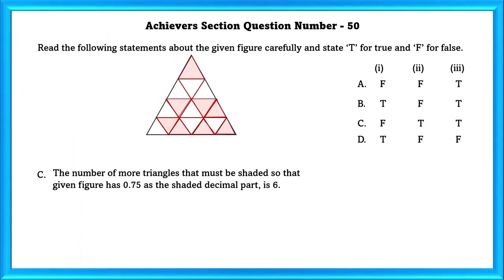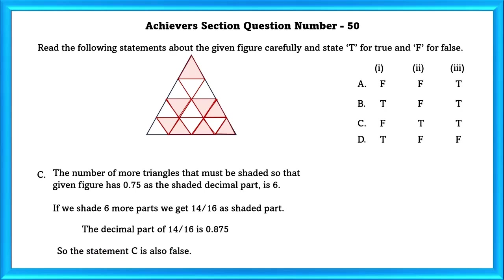C: The number of more triangles that must be shaded so that the given figure has 0.75 as the shaded decimal part is 6. If we shade six more parts we get 14 by 16 as a shaded part. The decimal part of 14 by 16 is 0.875, so statement C is also false, which leads us to the D option.